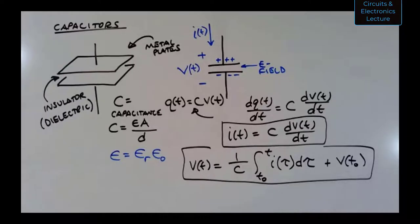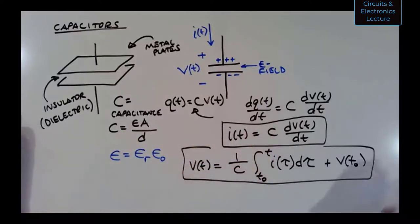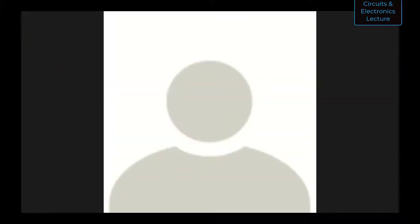A student asked whether the area A in the capacitance formula refers to one plate or both — it's the area of one plate, assuming two equal-area plates close together. Epsilon is the material property: air has one epsilon, ceramic has a different epsilon. Let's work an example. We have a 10-microfarad capacitor with a sinusoidal voltage V(t) = sin(10⁶ t).